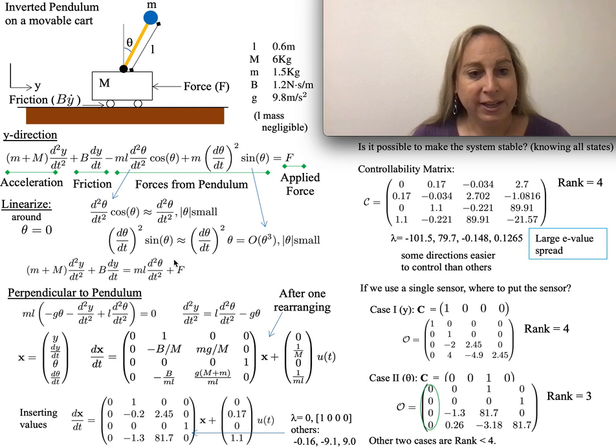I'm left with this equation here. From this equation and the previous one, I need to do some rearranging to put this into a classic form. A pretty classic approach takes these two equations, does some rearranging, and defines x equal to y, dy/dt, theta, dtheta/dt.